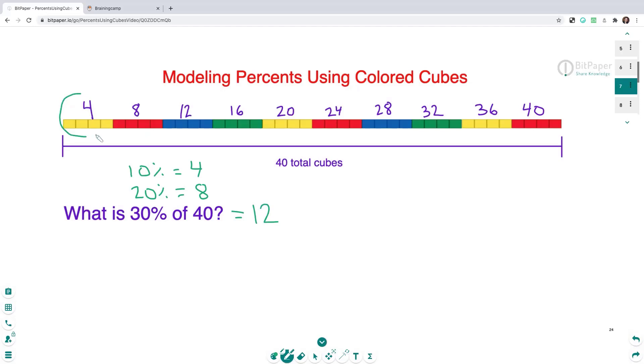And so 30%, let's check if that's going to be 12 cubes. All right, so here's 10%, there's my one group. Here's 20%, two groups. And then 30% or three groups. Yep, there are 12 cubes.